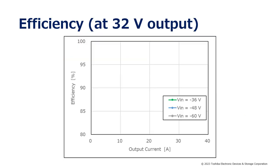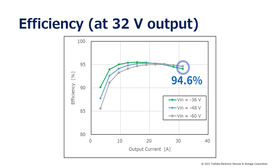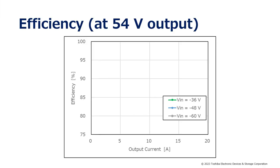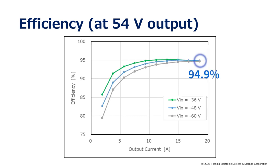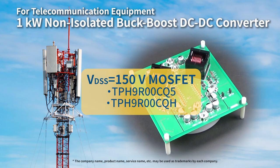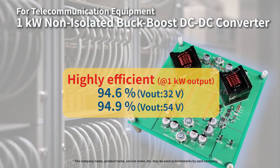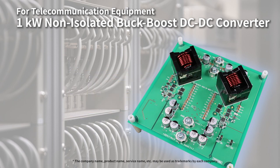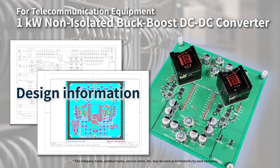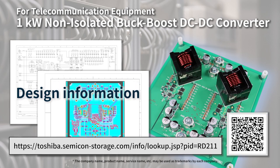An example of efficiency measurement of this reference design is shown here. When output voltage is set to 32 volts and input voltage is minus 48 volts, the efficiency is 94.6 percent at the rated output power of 1 kilowatt. When output voltage is set to 54 volts and input voltage is minus 48 volts, the efficiency is 94.9 percent at the rated output power of 1 kilowatt. Using the latest 150-volt MOSFETs enables highly efficient non-isolated buck-boost DC-DC converters for telecommunication equipment. Design information is published as a reference design for your use.